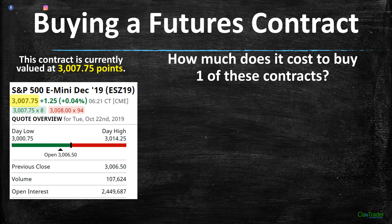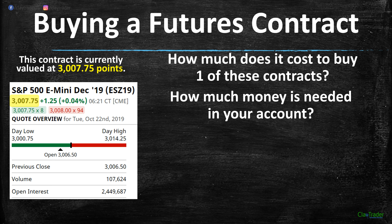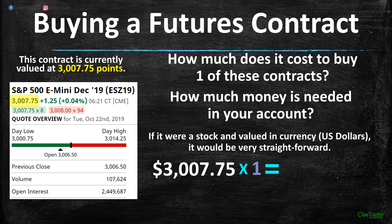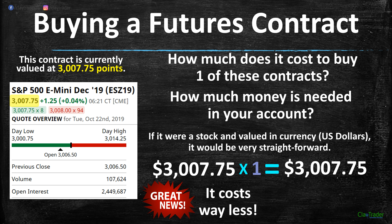How much does it cost to buy one of these contracts? How much money is needed in your account? If it were a stock valued in just a currency — because I'm in the US, my default is US dollars — it would be very straightforward. If it costs $3,007.75 and you want to buy one contract, that would equal $3,007.75. Very straightforward. Great news though: in the world of futures, it costs way less.